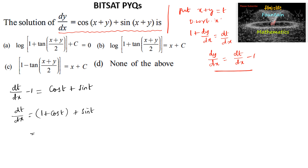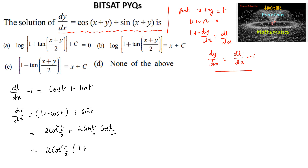We know that 1 + cos t = 2cos²(t/2), and using the sin t formula we get 2sin(t/2)cos(t/2). So we can factor out 2cos²(t/2), giving 1 + tan(t/2) where sin divided by cos is tan(t/2).